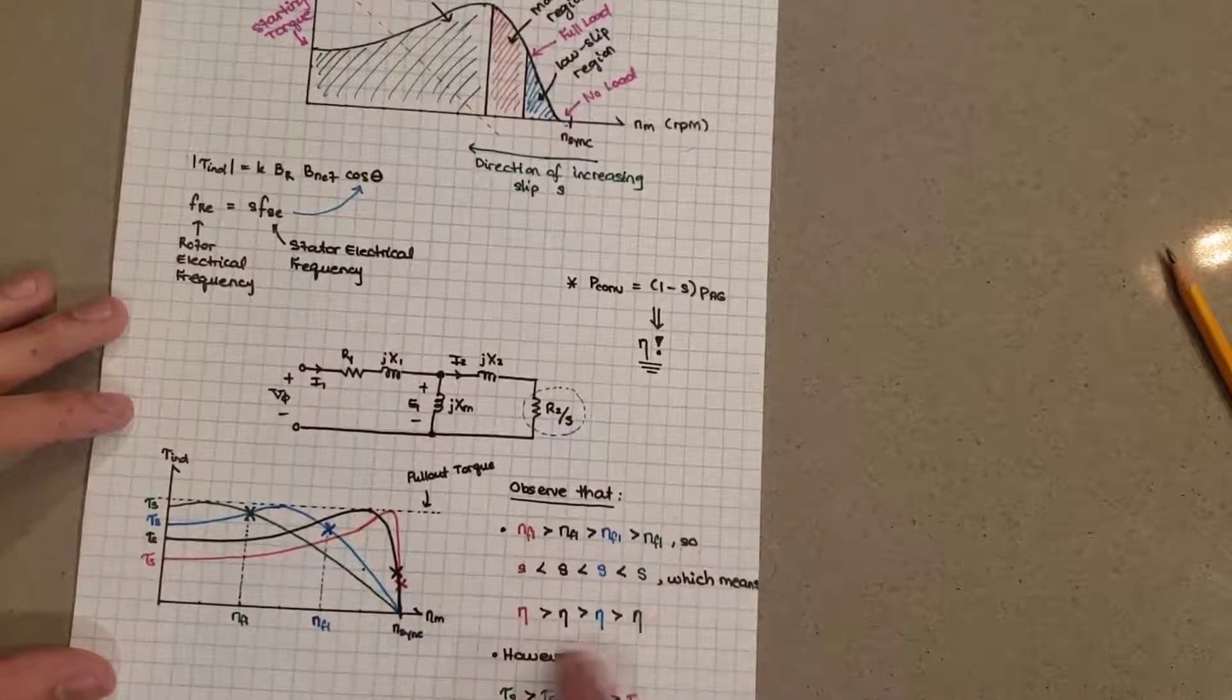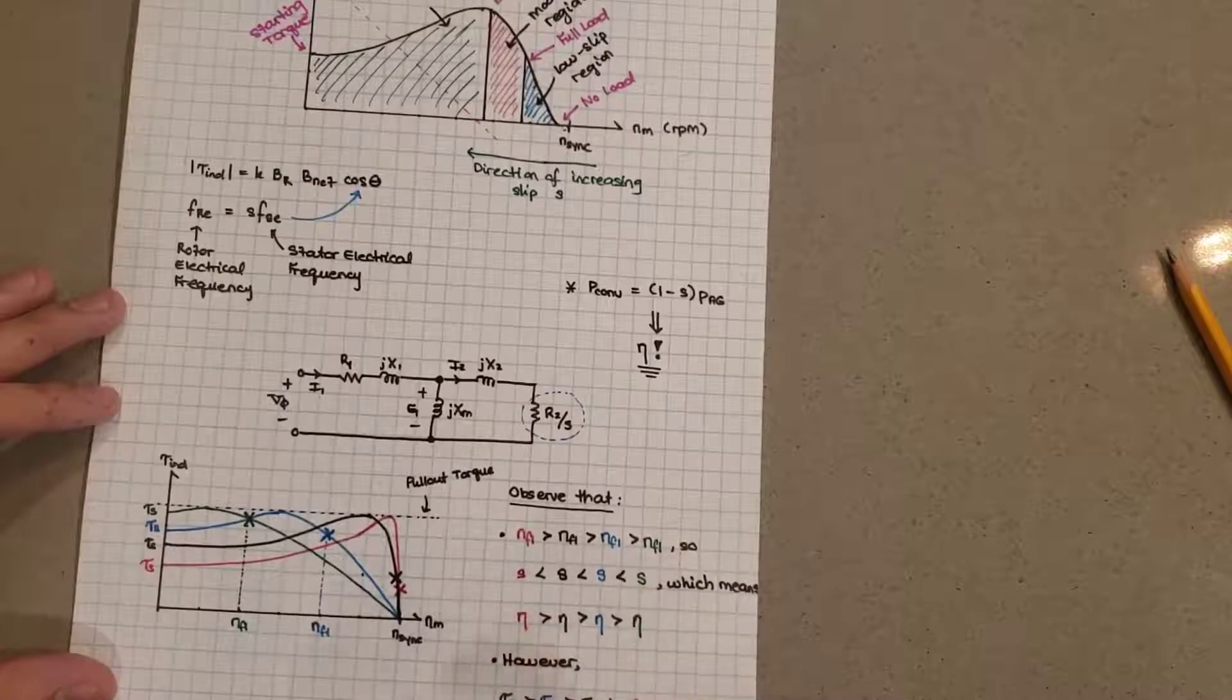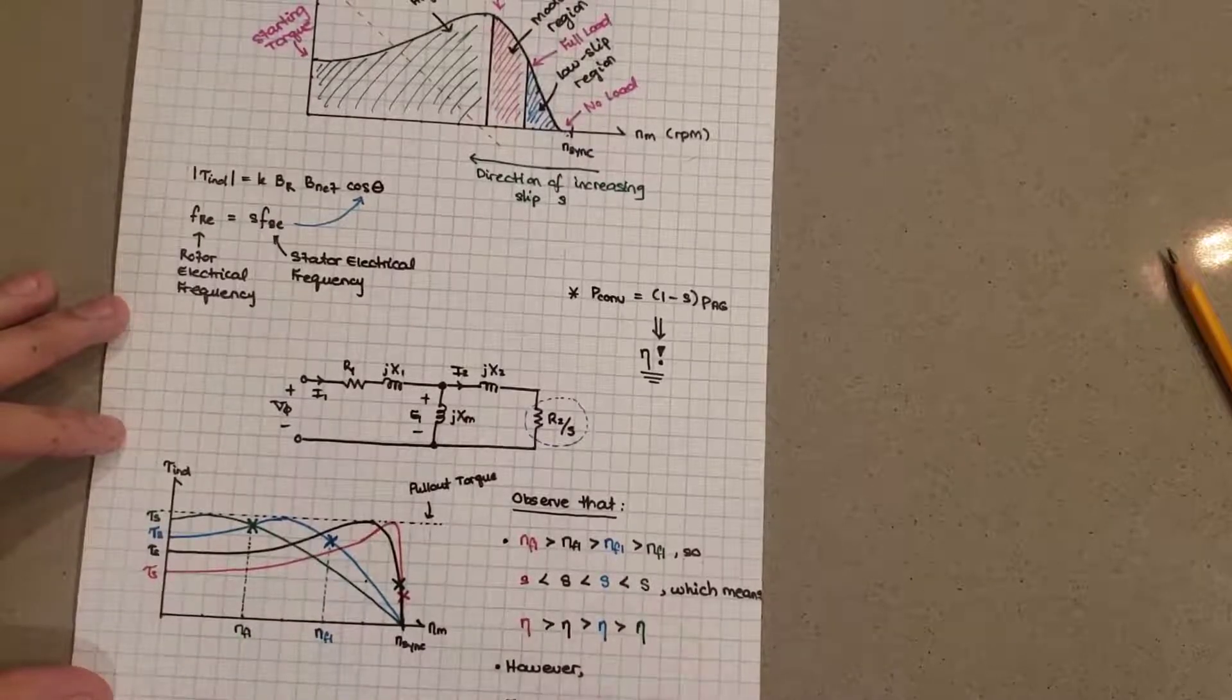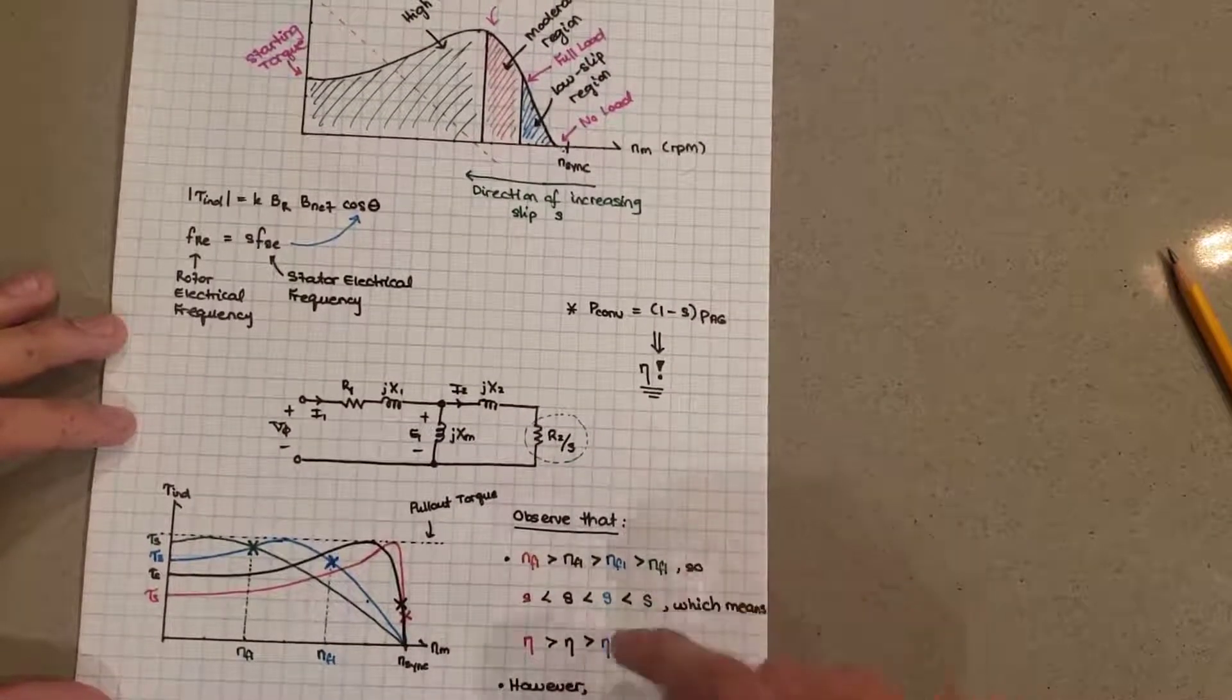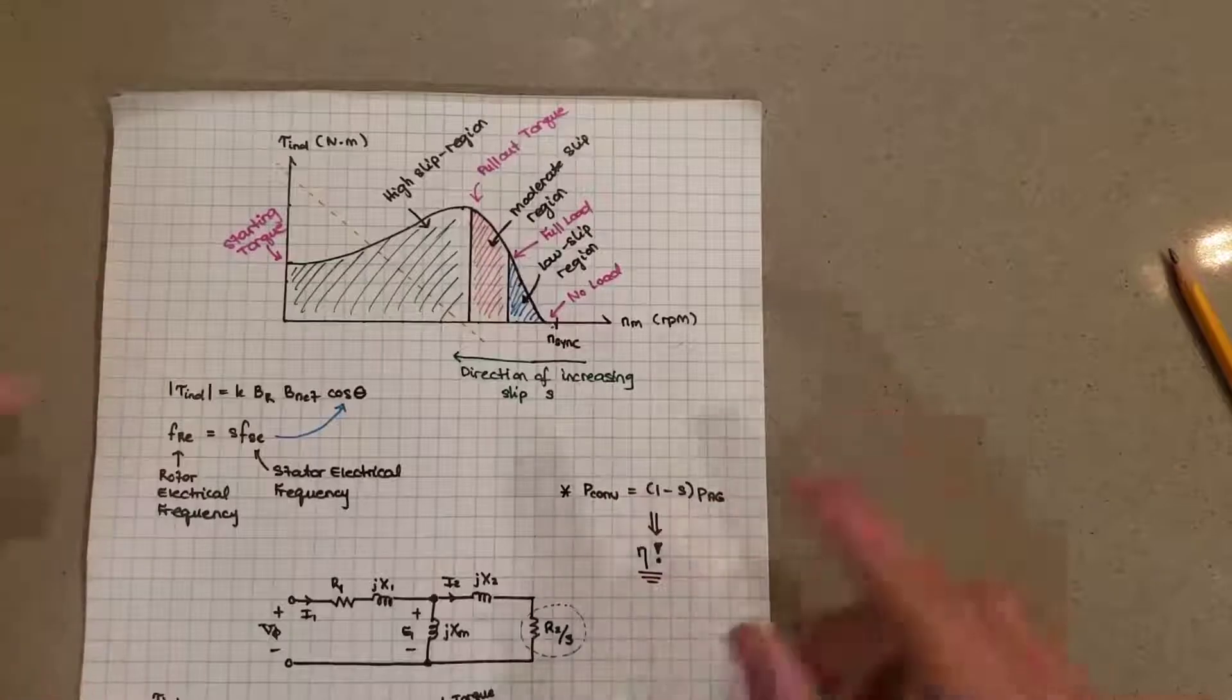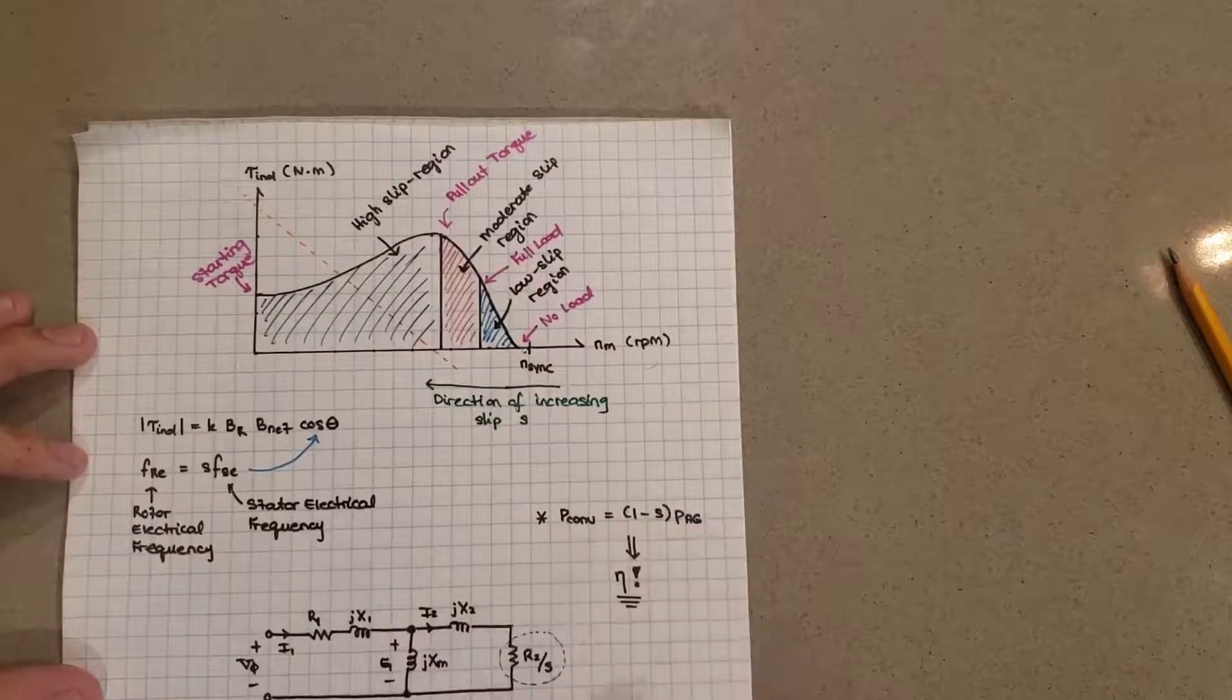Now this implies what? These are efficiencies. So what did I say here? I noted that because of these conditions, the efficiency of the red guy is actually the greatest of all of them, and this green guy over here, he has the lowest efficiency. Why do I say this? Where does this come from? We understand why this is implied from that, but why is this implied from that? Well, if you look at some of the equations I noted from the lab manual, you'll see this equation over here, this P converted is equal to 1 minus S P air gap.